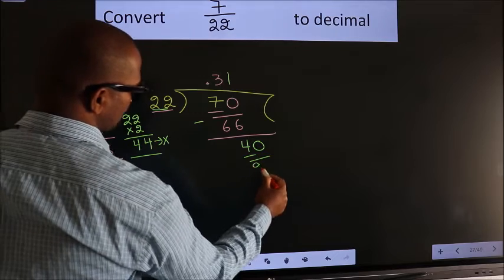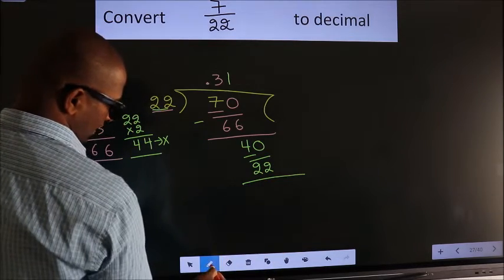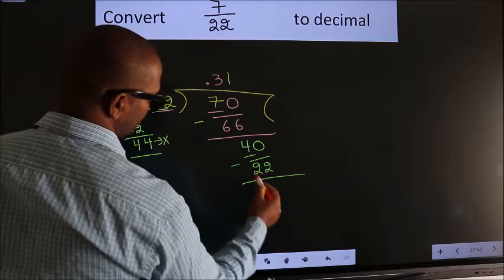22 times 1 is 22. Now we should subtract. We get 18.